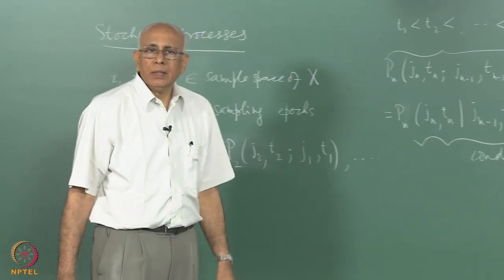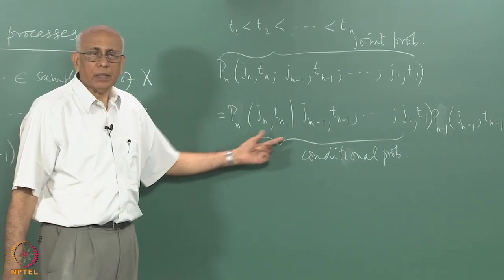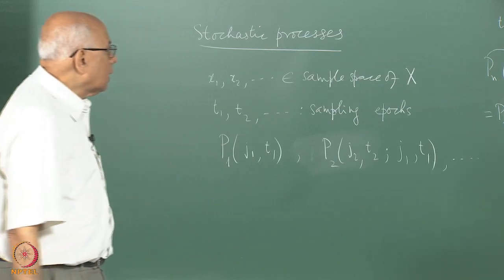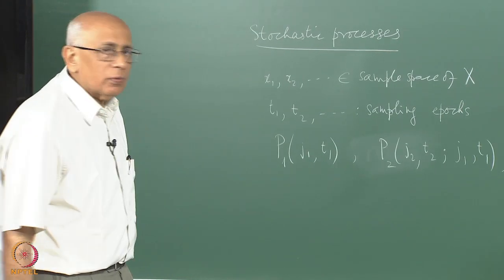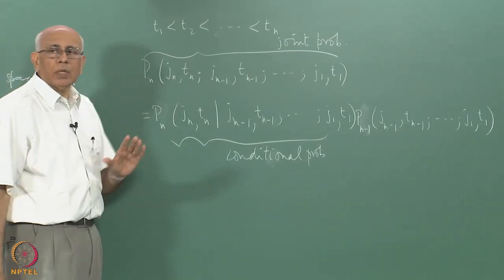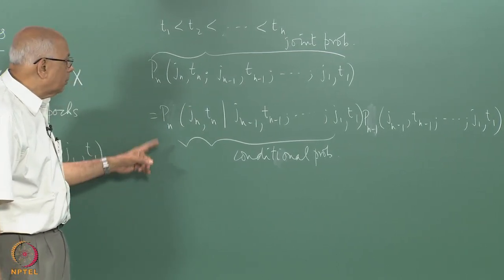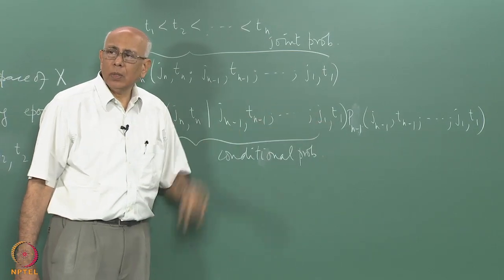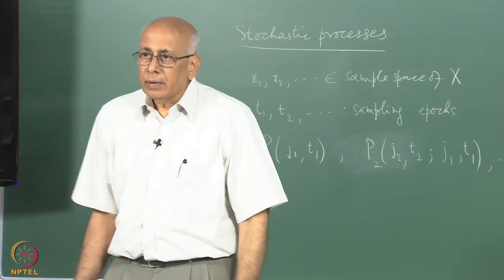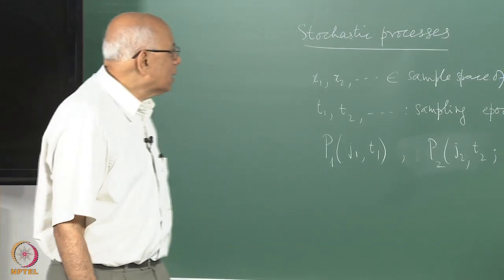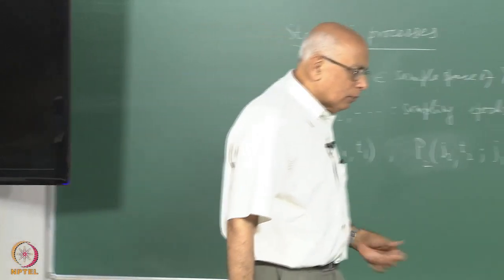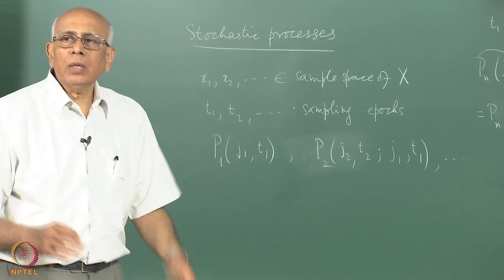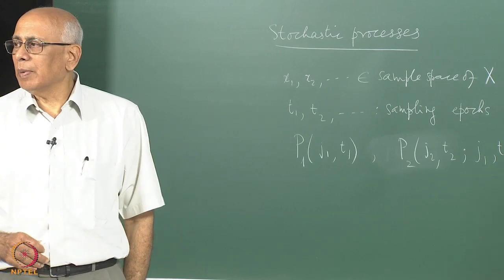But even that is not very helpful because you still have the formidable task of specifying all these conditional probabilities. That is why we are going to restrict ourselves to a very special kind of random process where the memory is a short-term memory in a very specific sense. In nature, very often, if you use the right number of variables — a complete set — then it is short-term memory that occurs, never long-term memory, no history dependence in a certain specific sense.